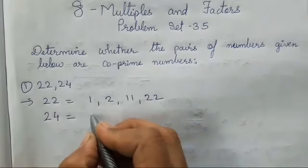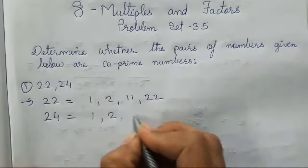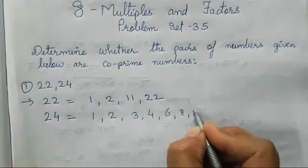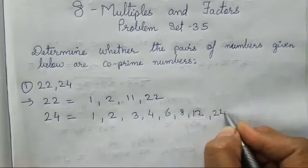Then 24, 24 comes in the table of 1, 2, 3, 4, 6, 8, 12 and 24.